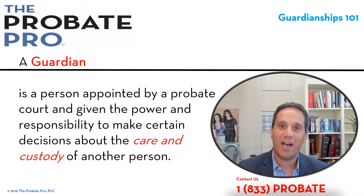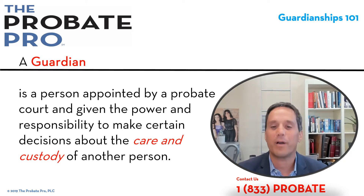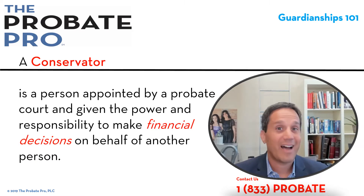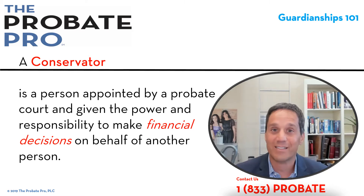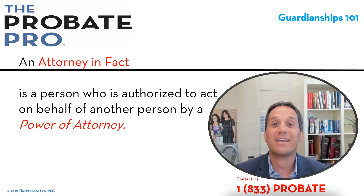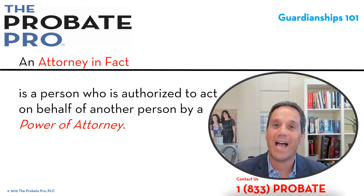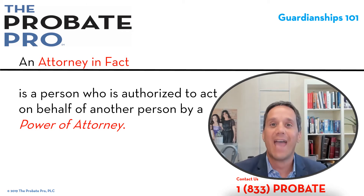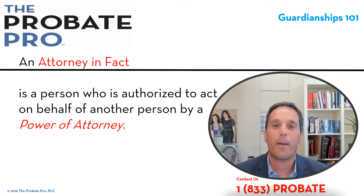A guardian is a person appointed by a probate court given the power and responsibilities relating to care and custody. A conservator is appointed by a probate court given the power relating to financial and legal decisions. An attorney-in-fact is not created by court but is authorized to act in an estate planning document called a power of attorney, which can come in a variety of forms — including a durable power of attorney and powers of attorney relating to health care, like a patient advocacy. These are all different types of agency-principal relationships through a power of attorney.